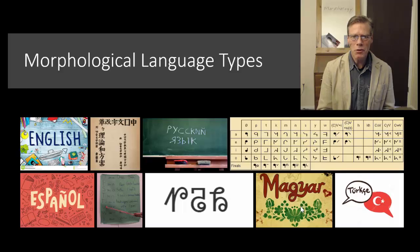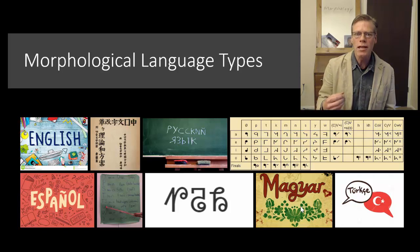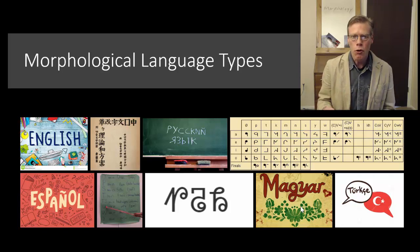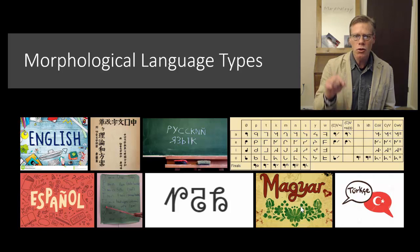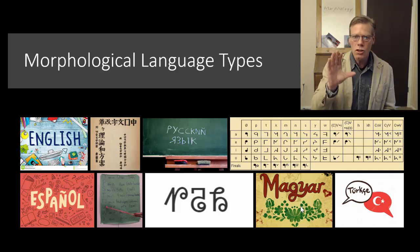Morphological types of languages. In this video, I'm going to be discussing a way of describing the world's languages according to how they use morphology. Specifically, we're going to be dividing languages into two types: analytic languages and synthetic languages. Within the synthetic languages, we'll see that there are further subtypes.